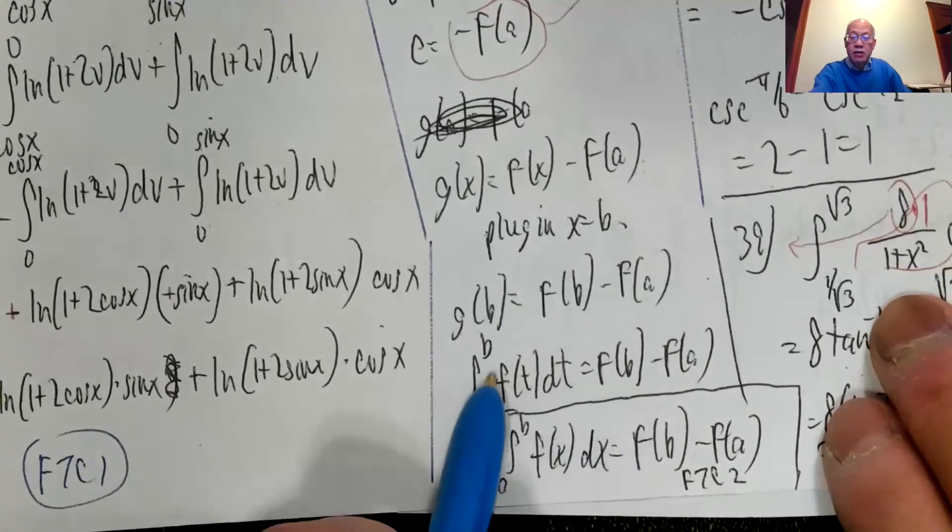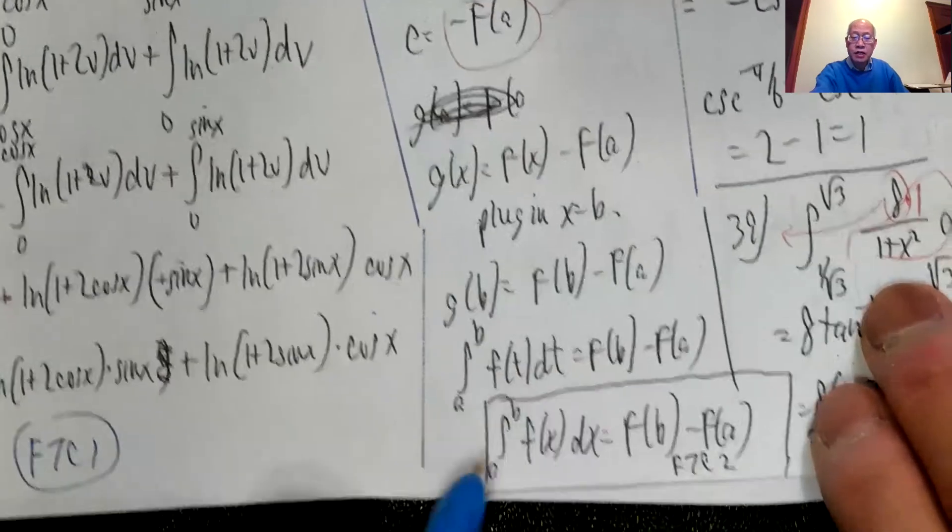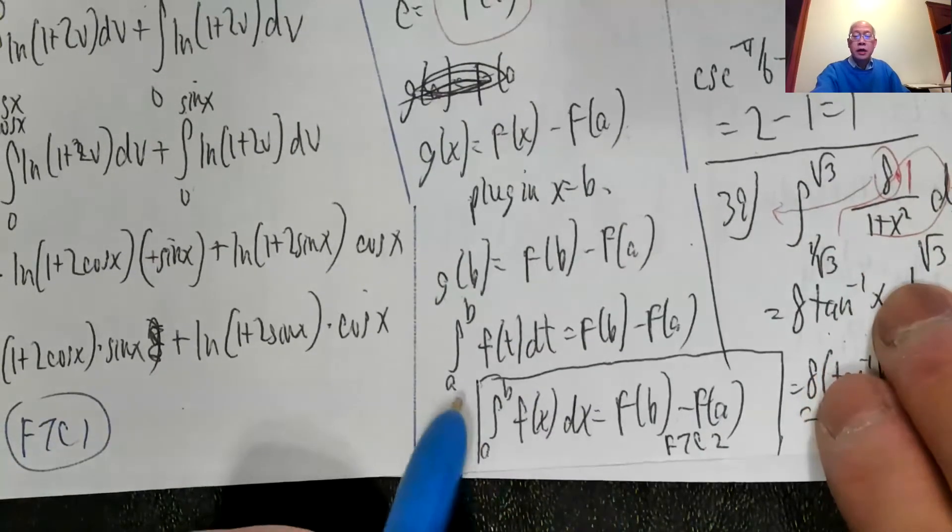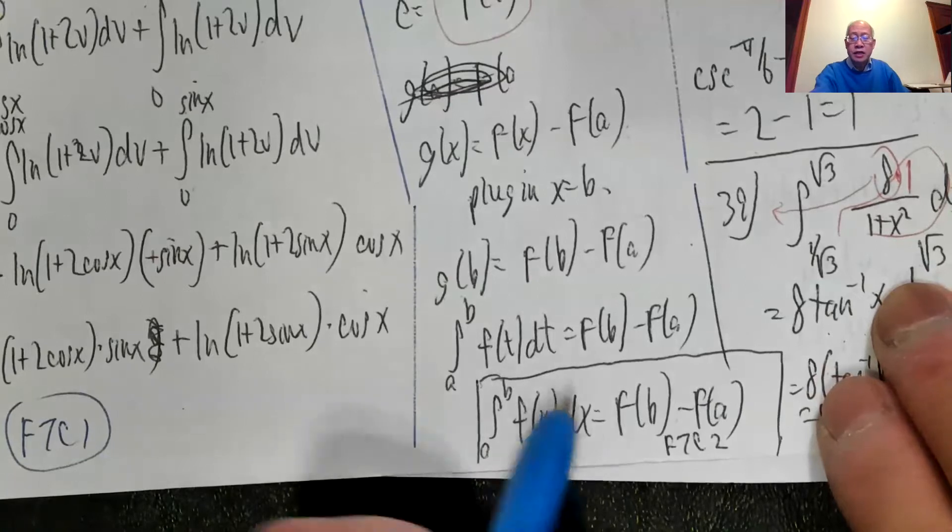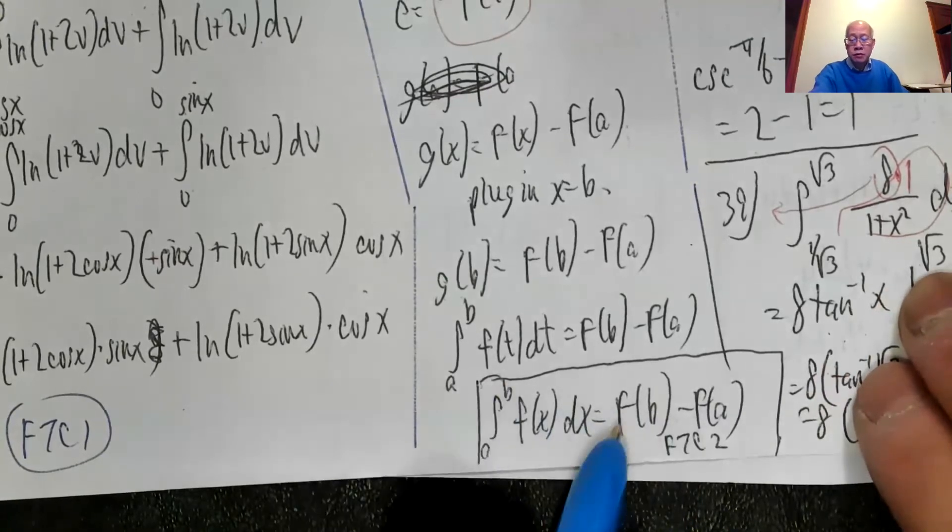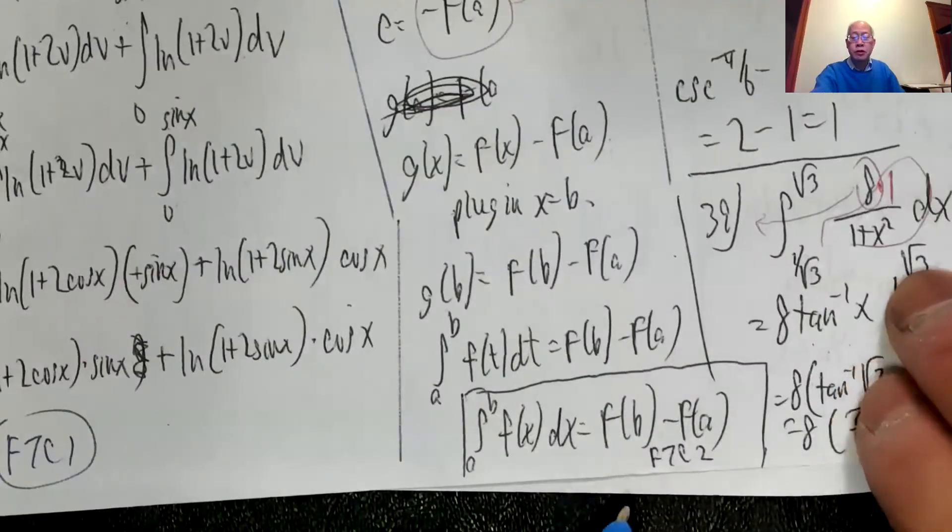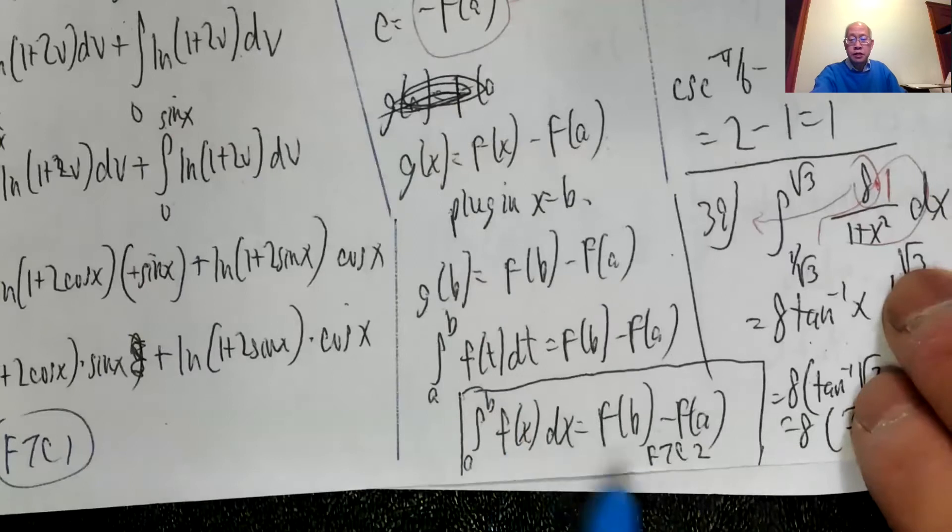We could stop here, but now that I don't have any x anymore here, I can switch this back to using the letter x. So FTC2: integral from a to b of f of x dx is capital F of b minus capital F of a. This is fundamental theorem of calculus part two. You're not responsible for this derivation. I'm responsible for the derivation. You're responsible to use this.